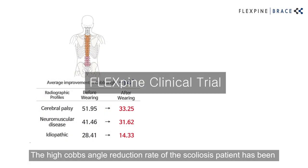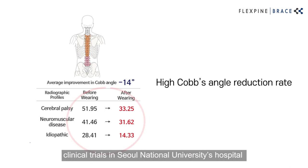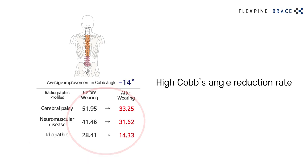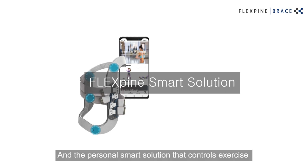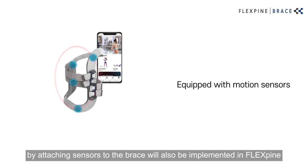The high Cobb's angle reduction rate of scoliosis patients has been the most positive effect of Flexpine, and this has been proven in actual clinical trials at Seoul National University's hospital and published in the renowned journal Medicine. A personal smart solution that controls exercise by attaching sensors to the brace will also be implemented in Flexpine.